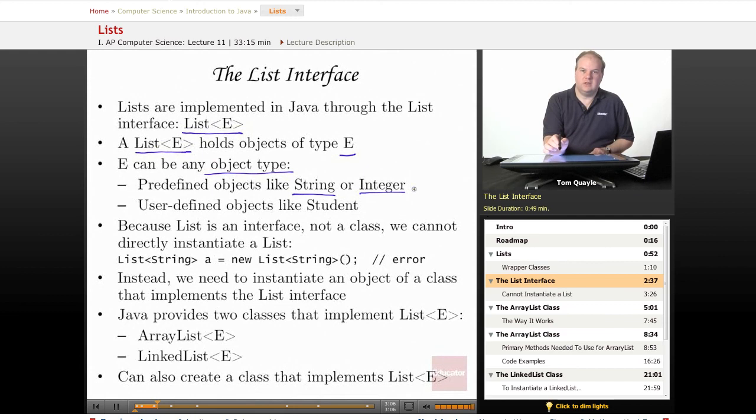You can have a list of predefined objects like strings or the Integer wrapper class that I just talked about. You can also create a list of any user-defined objects that you may have in your code. So if you define a class called Student, you can add students to a list that you create because they are objects. And any type of object, whether it's predefined or user-defined, can be stored and accessed in a list.